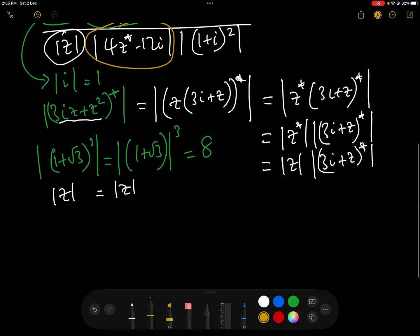4z conjugate minus 12i. Let's have a look at that. Modulus of 4z conjugate minus 12i. Let's just take the 4 out. 4 brackets, z conjugate minus 12i, which then by modulus rule 1, we have modulus 4, modulus z conjugate minus 12i.